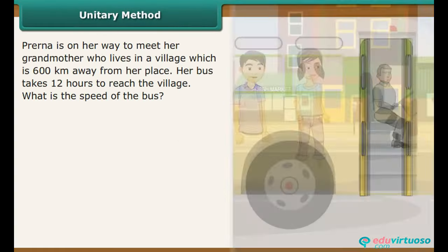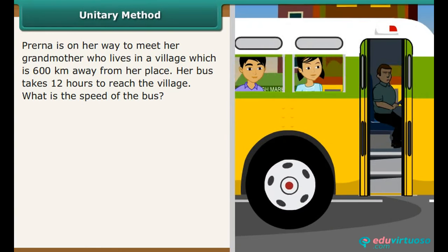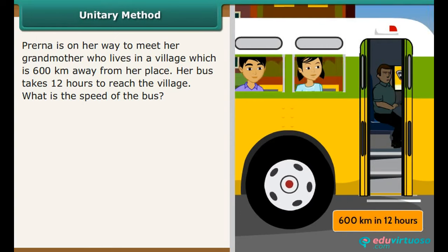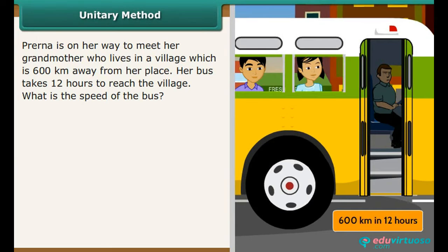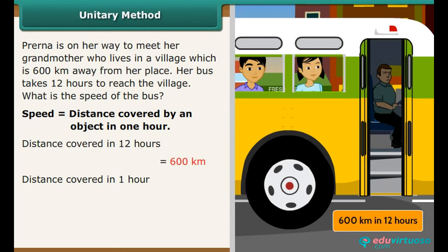Unitary Method. Prerna is traveling to her grandmother's village, 600 km away, and the bus takes 12 hours. What is the speed of the bus? Speed is the distance covered in 1 hour. Distance in 12 hours is 600 km, so distance in 1 hour is 600 divided by 12, which equals 50. Therefore, the speed of the bus is 50 km per hour.